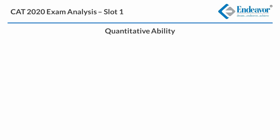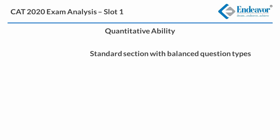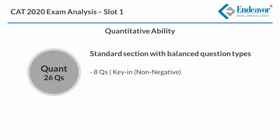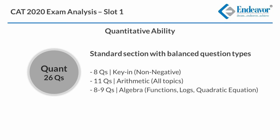Slot 1 QA sectional turned out to be a beautiful standard textbook sectional with a neat balance of different question types. With a total of 26 questions, QA had 8 non-negative key-in questions. The 11 arithmetic questions covered almost all topics. There were 8 to 9 algebra questions, which focused mainly on functions, logarithm, and quadratic equations. In addition, there were about 3-4 questions on numbers and 3 questions of geometry.